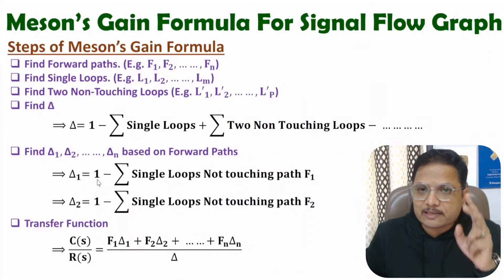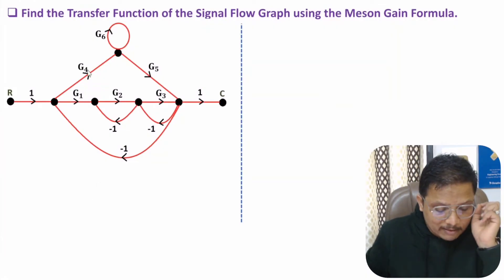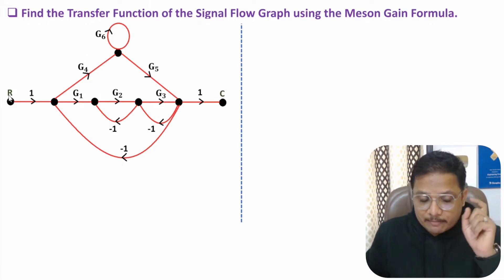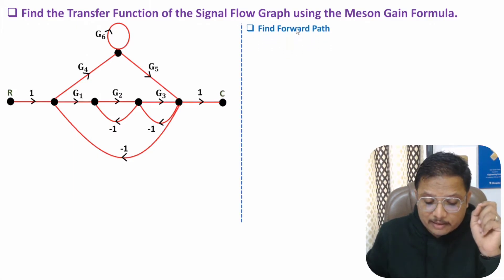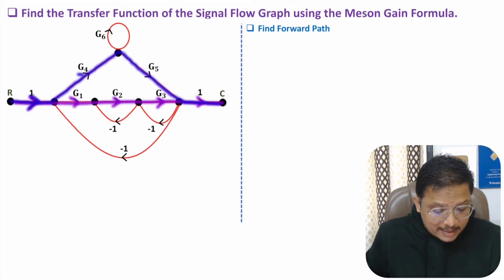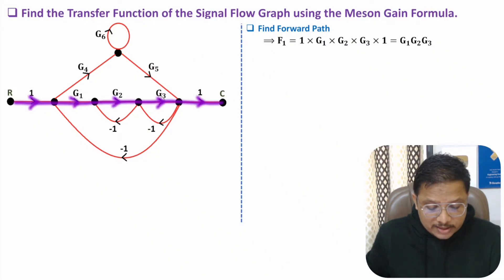Now let us apply Mason's gain formula in problem number 1. Here we have been given a signal flow graph where input is R and output is C. We need to identify the transfer function, which means C divided by R. The first step is identification of forward paths. From input to output, we have one forward path and a second forward path. The first forward path F1 is 1·G1·G2·G3·1, which equals G1·G2·G3.